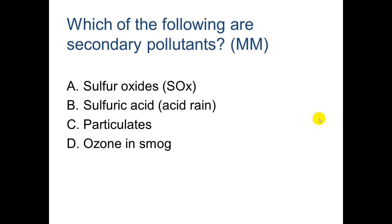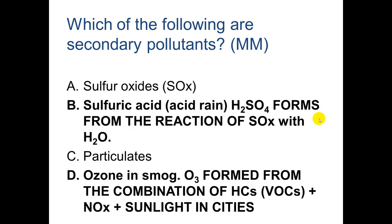Which of the following are secondary pollutants? This is a multiple-mark question — go ahead and pause. If you said B and D, you're correct. Sulfuric acid is H2SO4, which forms from the reaction of SOX, or sulfur oxides, with H2O.